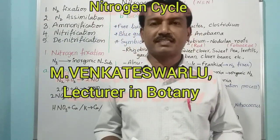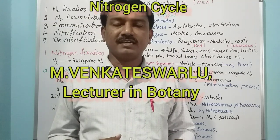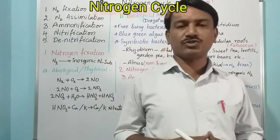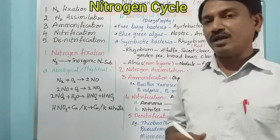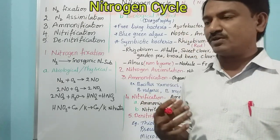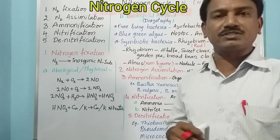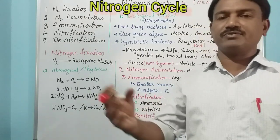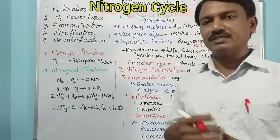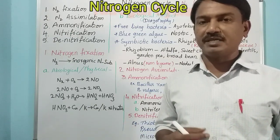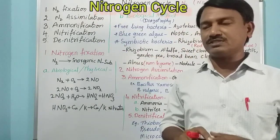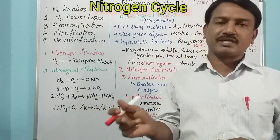Hello students, today we are discussing the nitrogen cycle. Nitrogen is a macronutrient present in gaseous form in the atmosphere — about 72% of nitrogen is present in the atmosphere. Plants require nitrogen for the synthesis of amino acids, proteins, and genetic material. However, plants cannot absorb nitrogen directly from the atmosphere, so they depend on others.